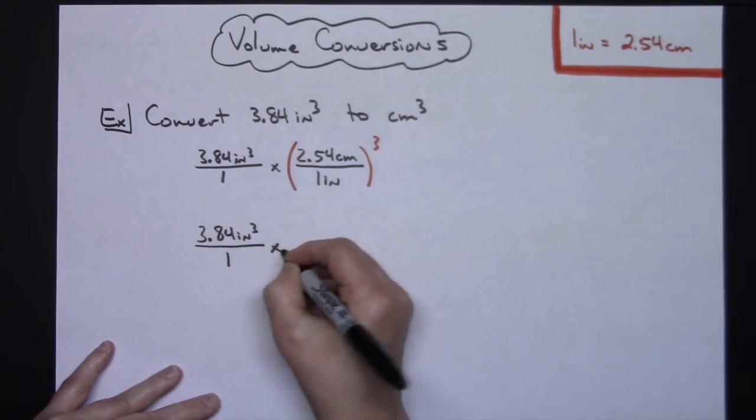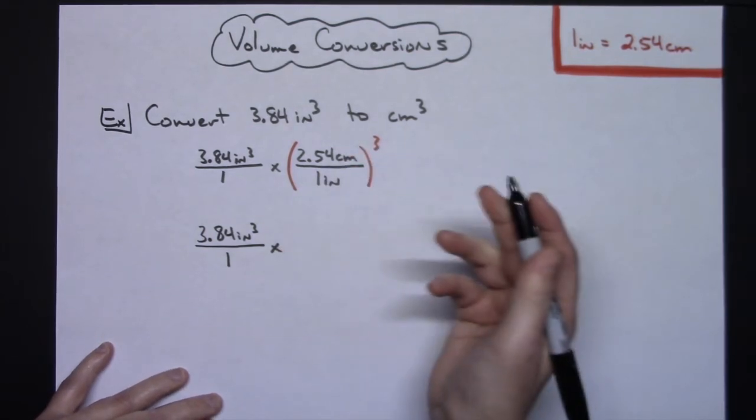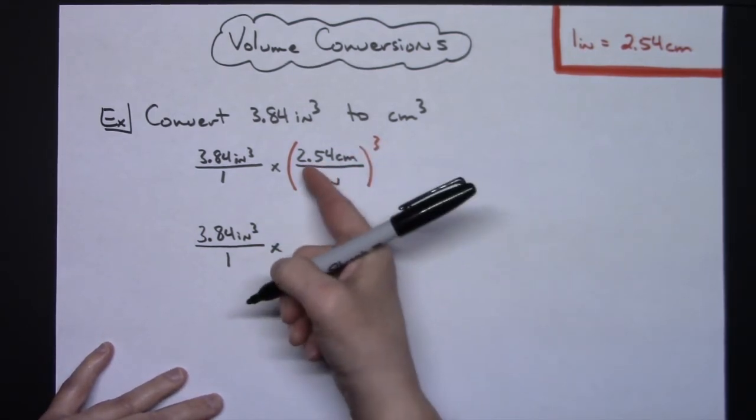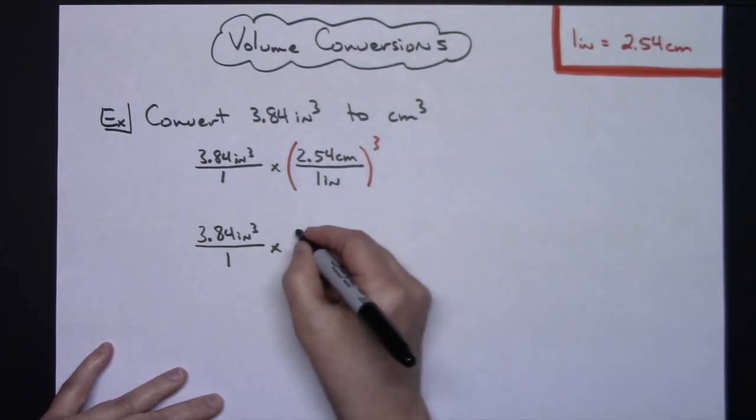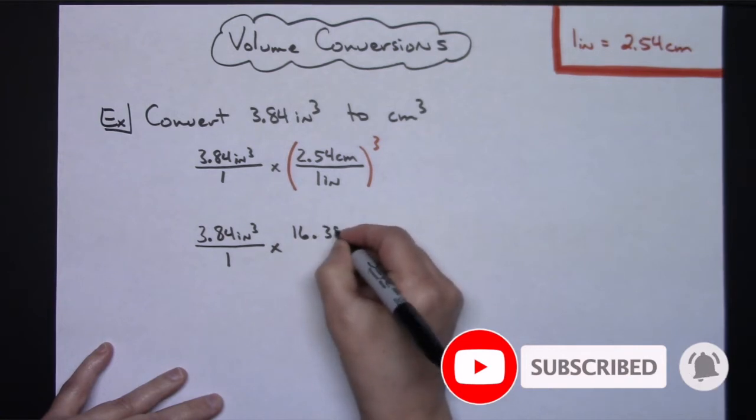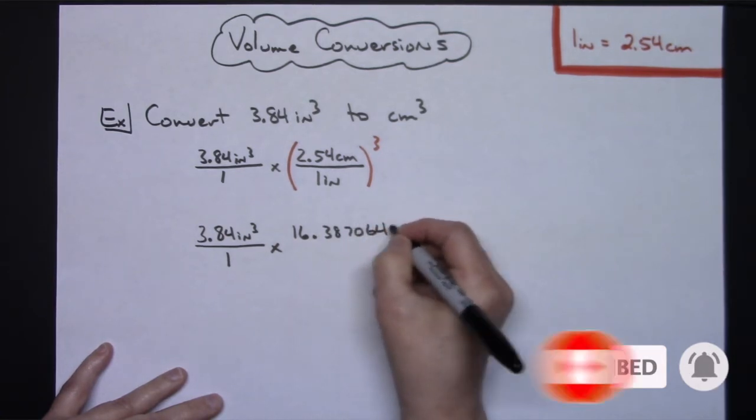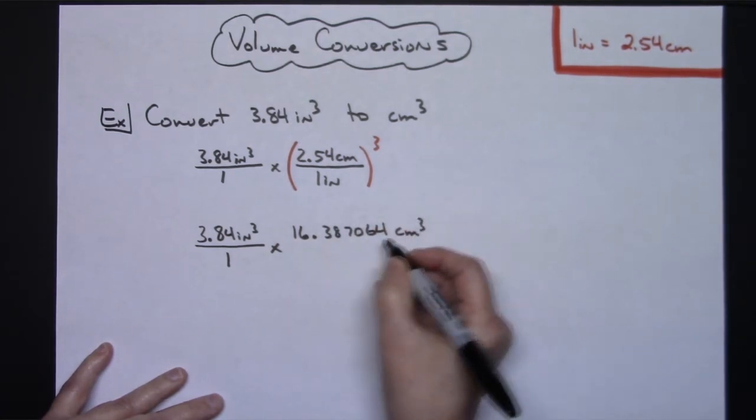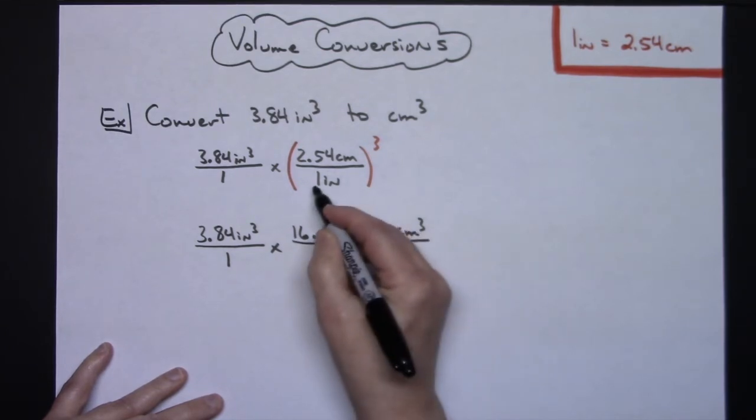All right, assuming you're going to cube that number there, you're going to use a calculator. So 2.54 raised to the third power, I am not going to do any rounding here on what I write down, so 16.387064 cubic centimeters because you got to cube the label as well.